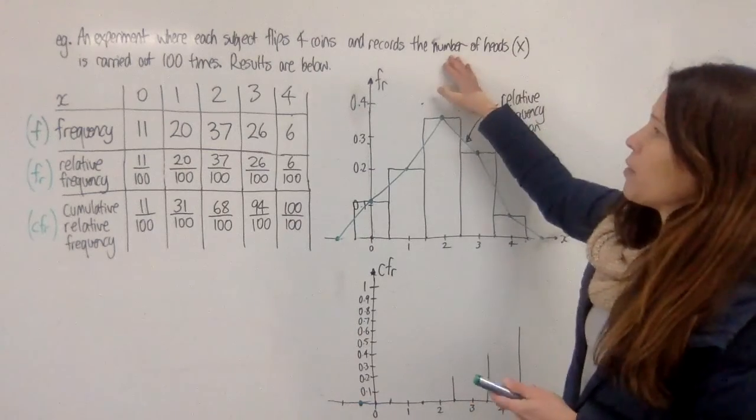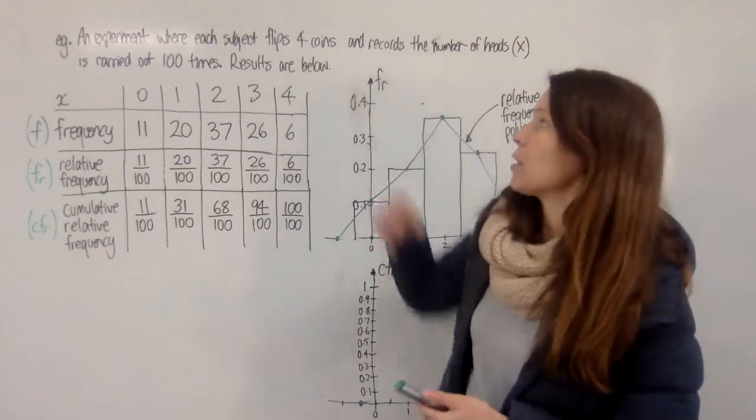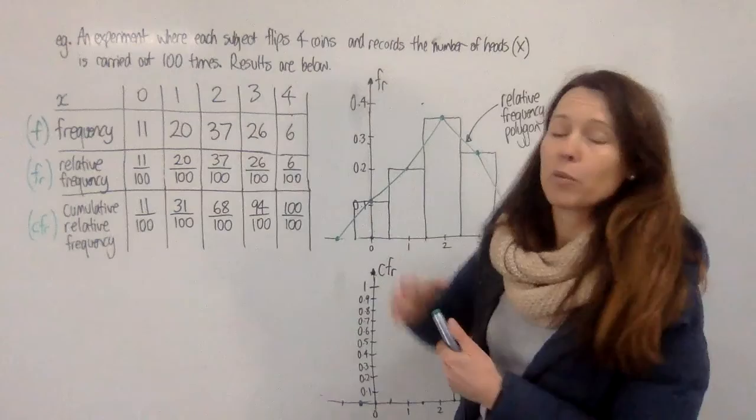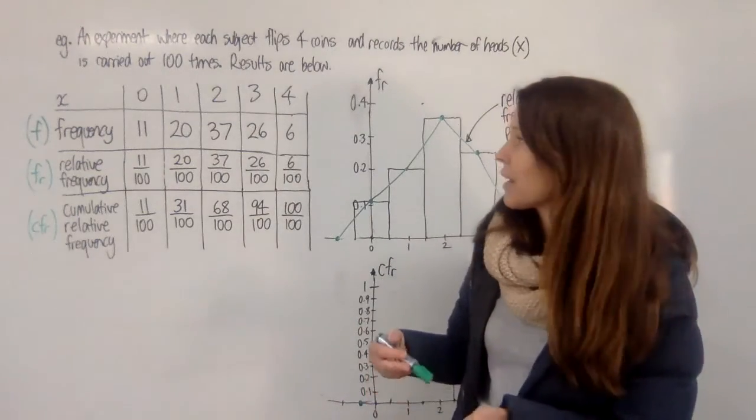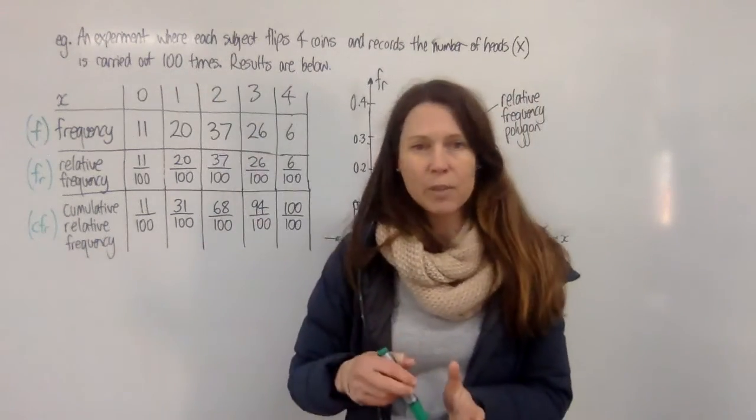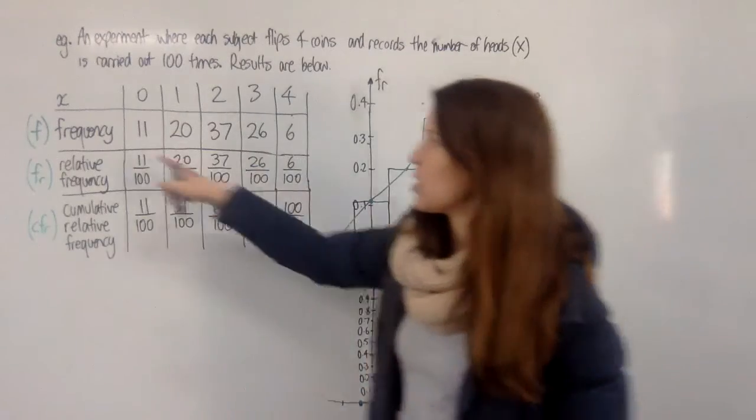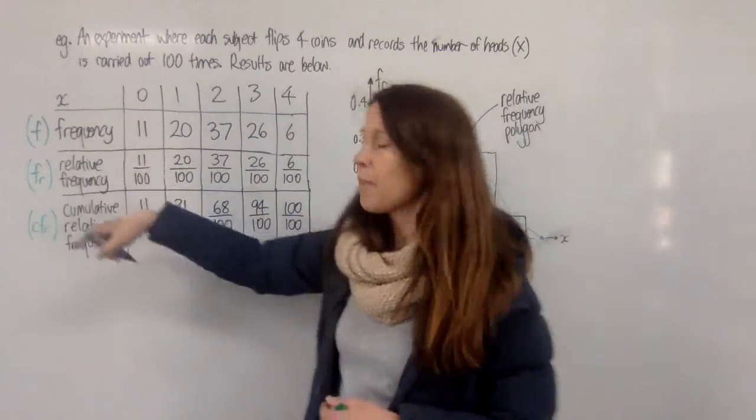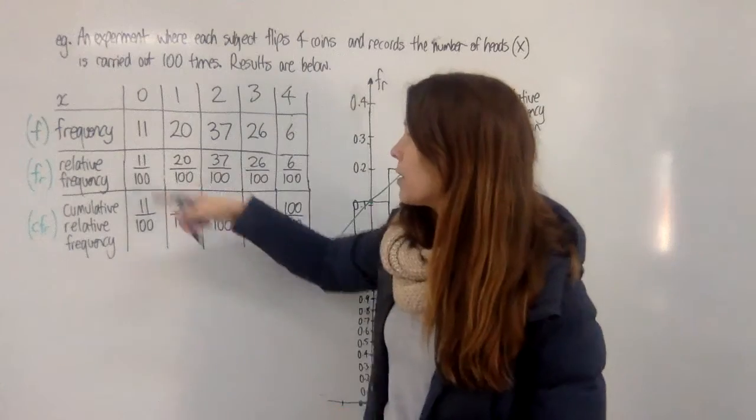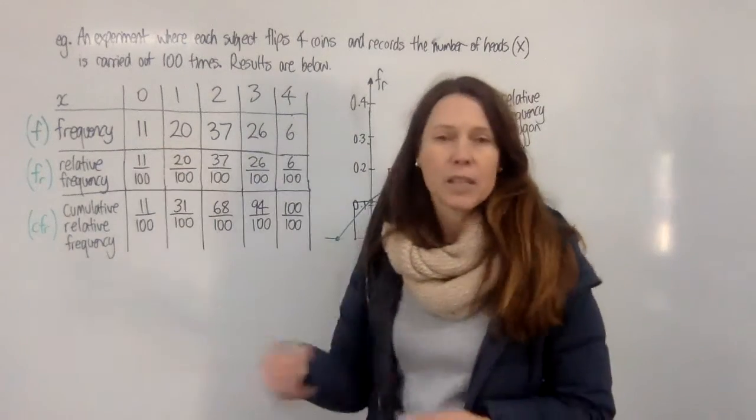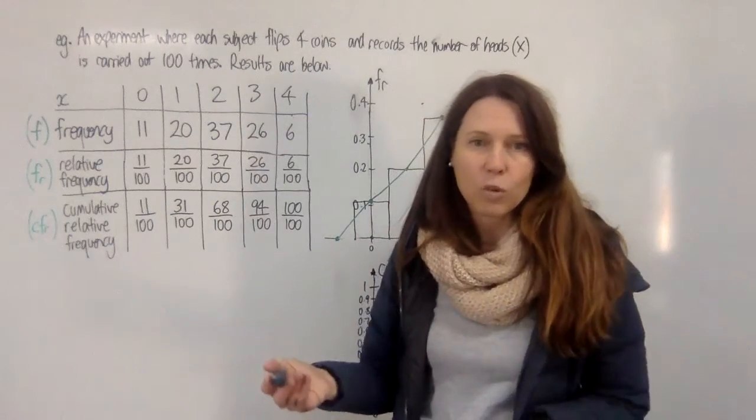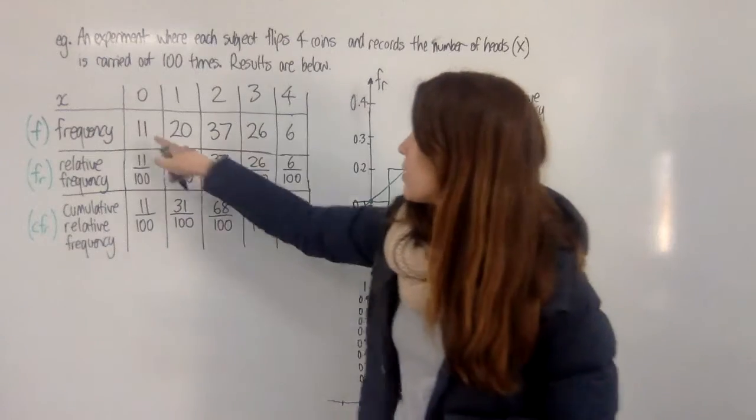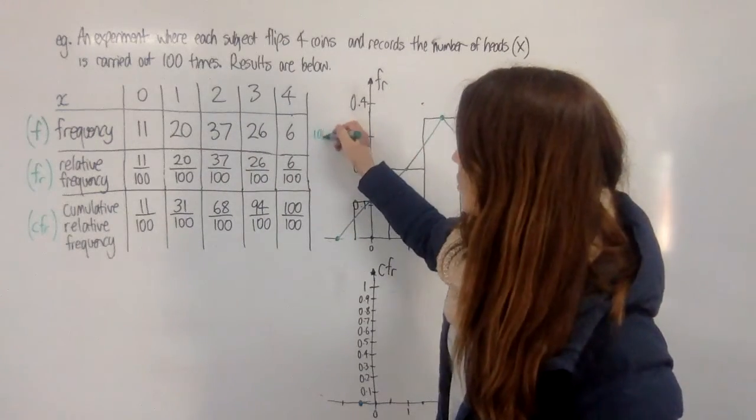So in this experiment, we're getting each person who takes part to flip four coins and have a look at how many heads they get. And we're carrying out the experiment 100 times. So then, if we just list the frequency of how many times each thing happened, here we've got 11 times that somebody flipped a coin and must have got all tails, no heads at all. So these will then add up to 100 as a sum.